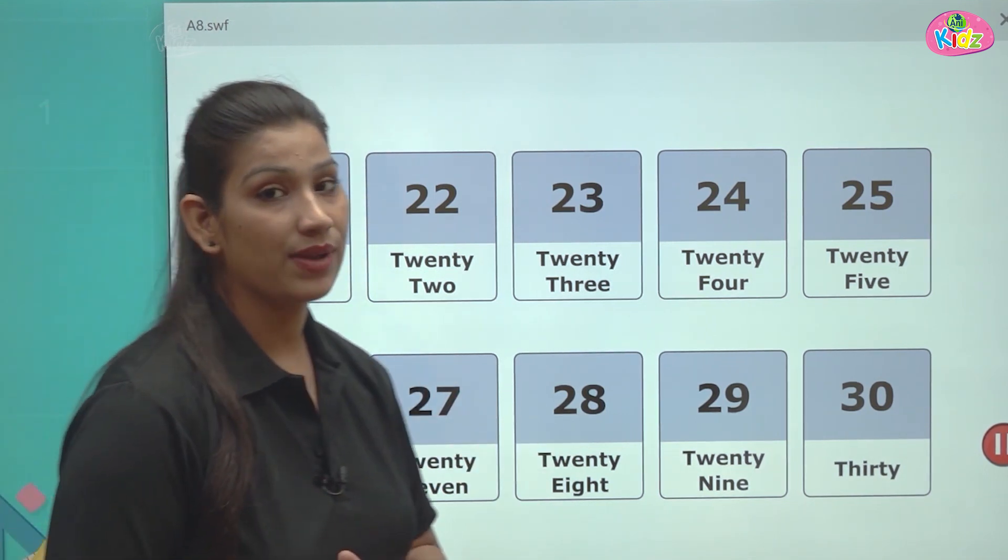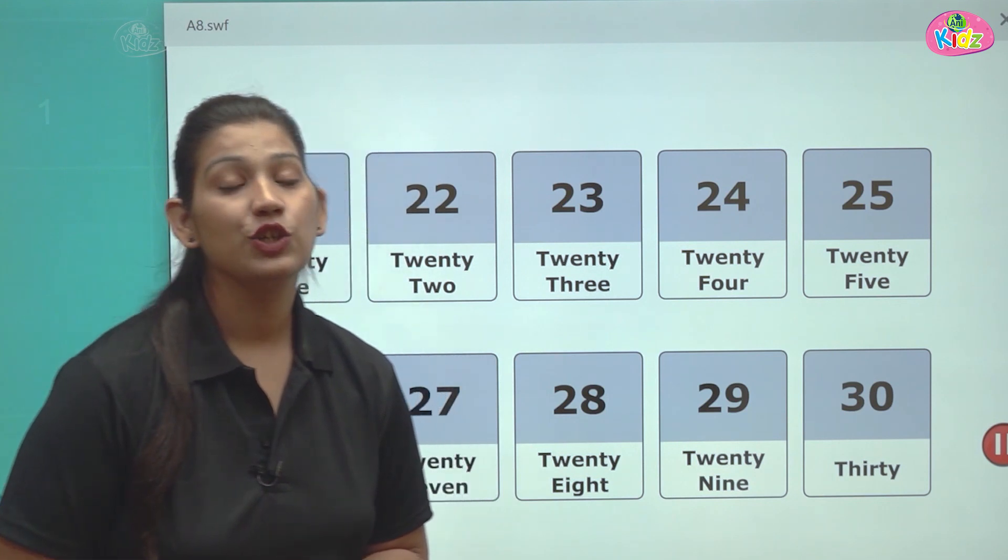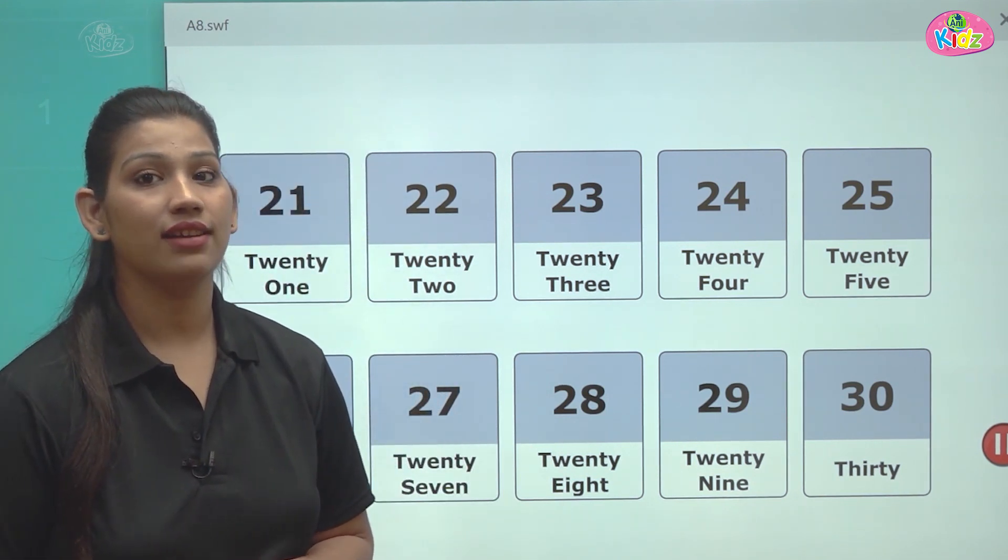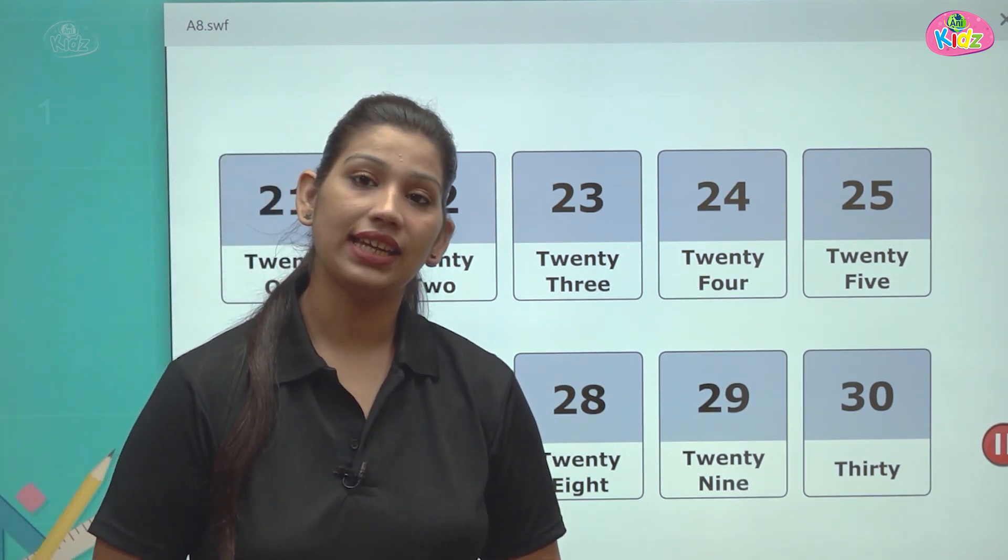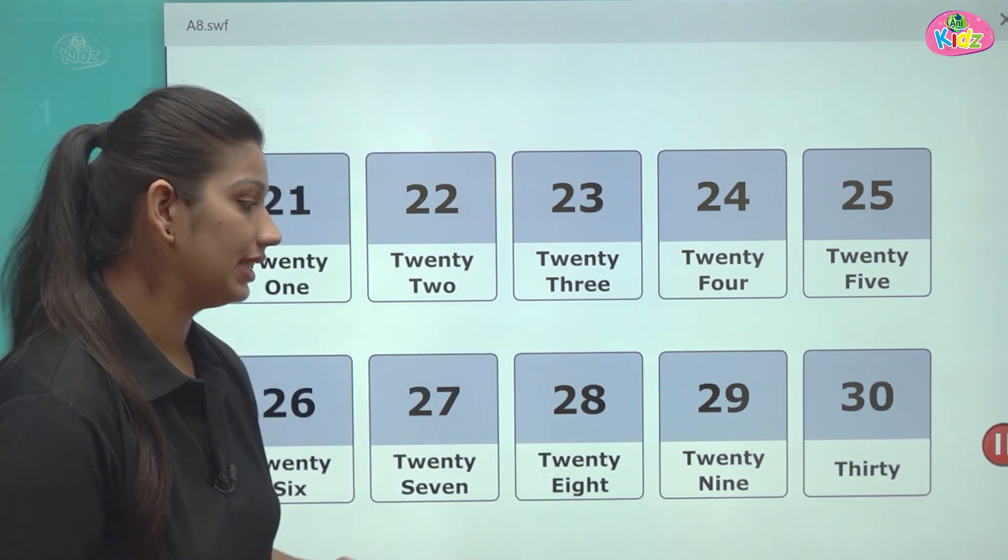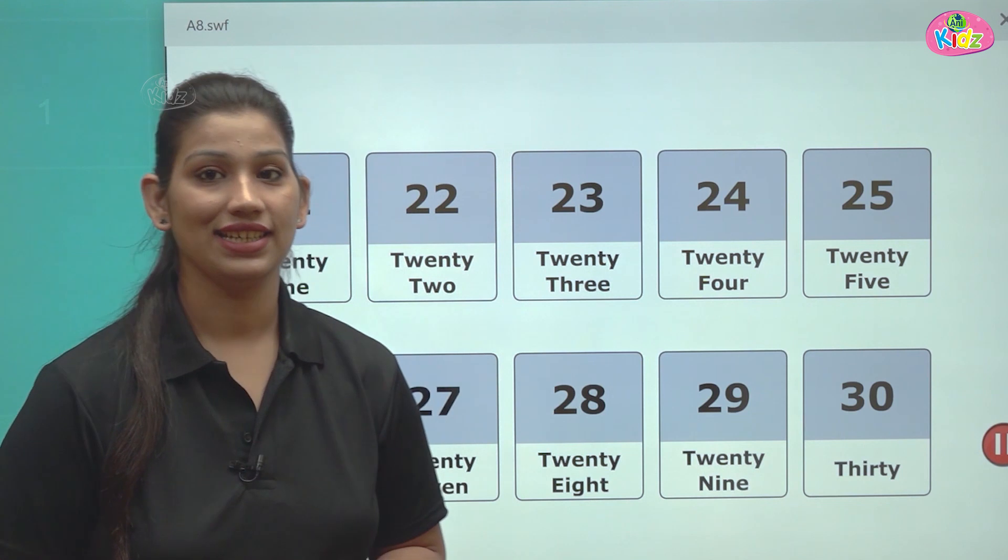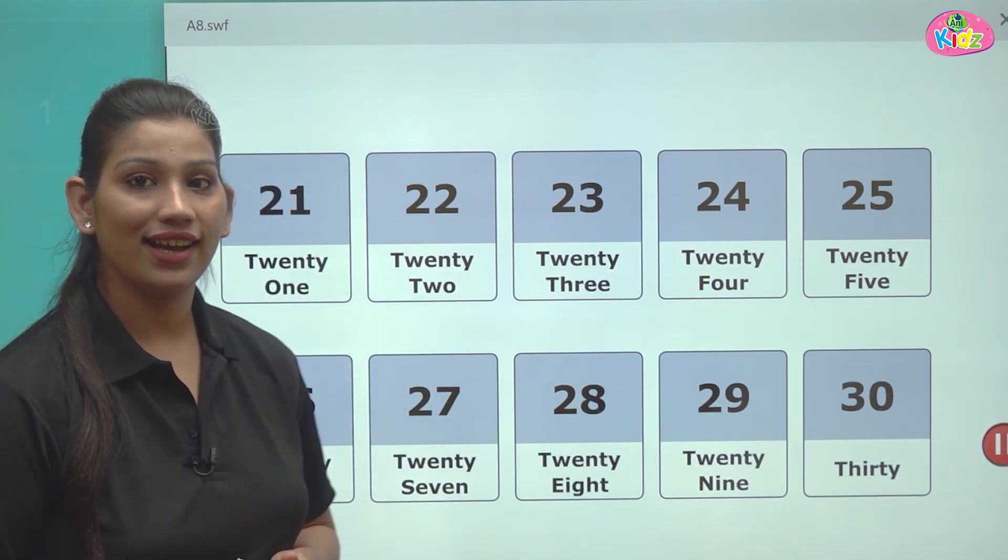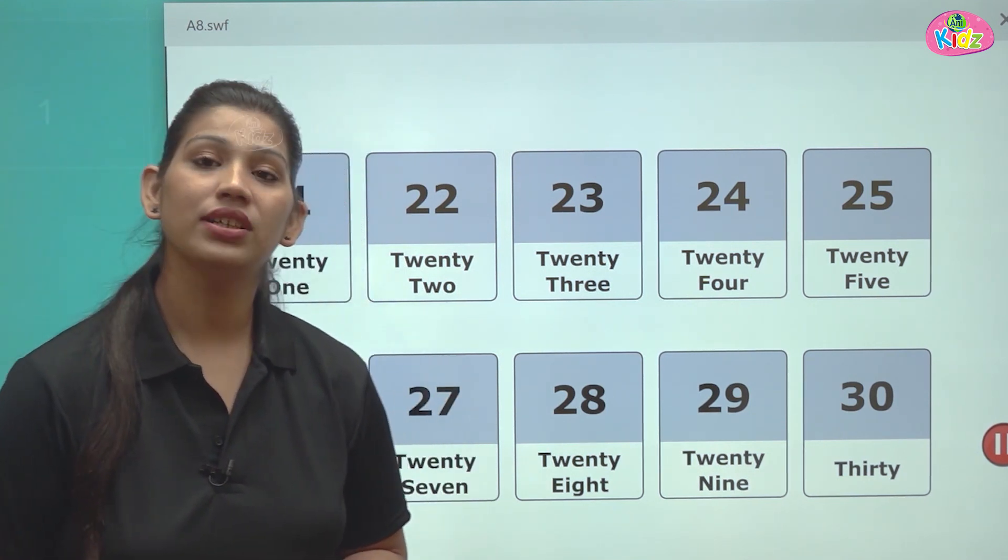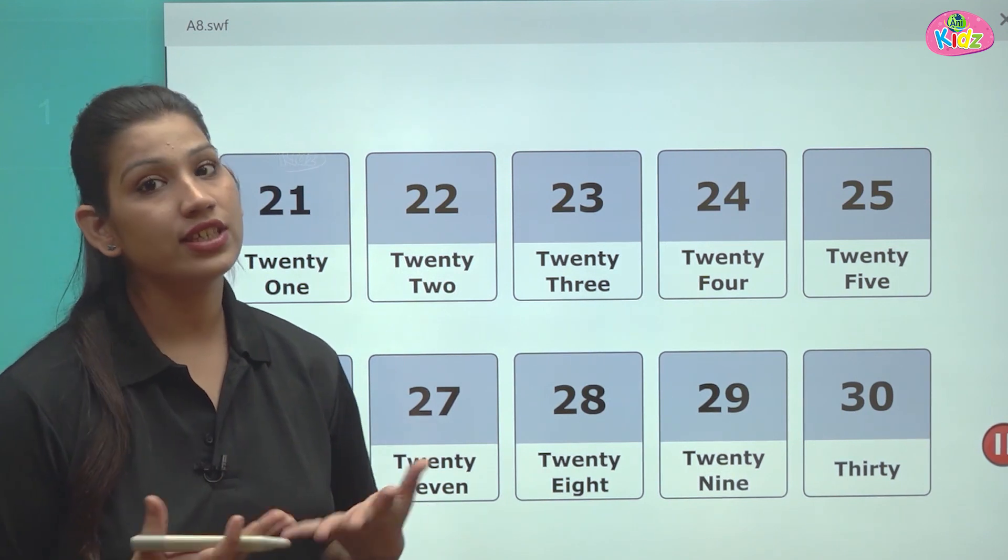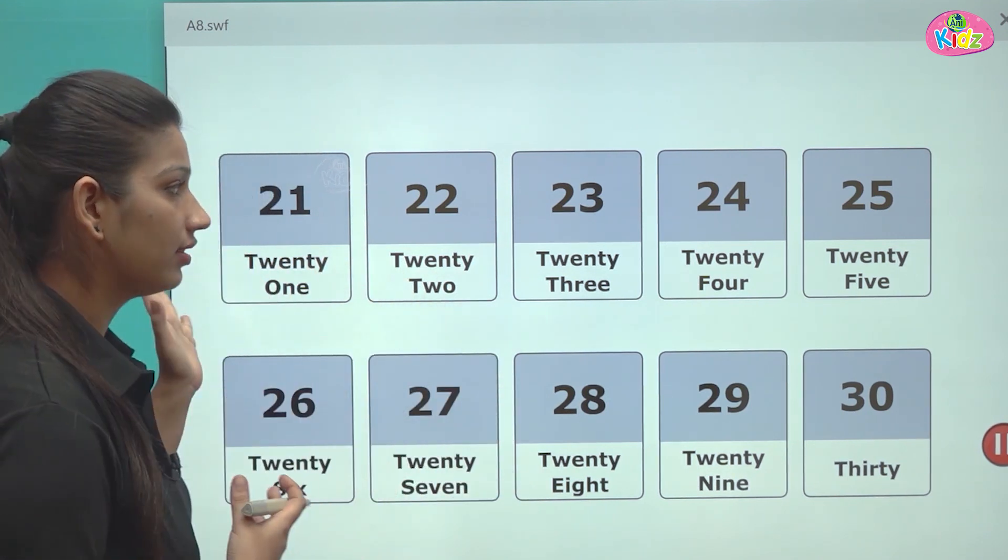Let us understand the spelling of number 30. 29 ke baad aata hai number 30. T-H-I-R-T-Y. Number 30. And after 30 also this pattern goes on.